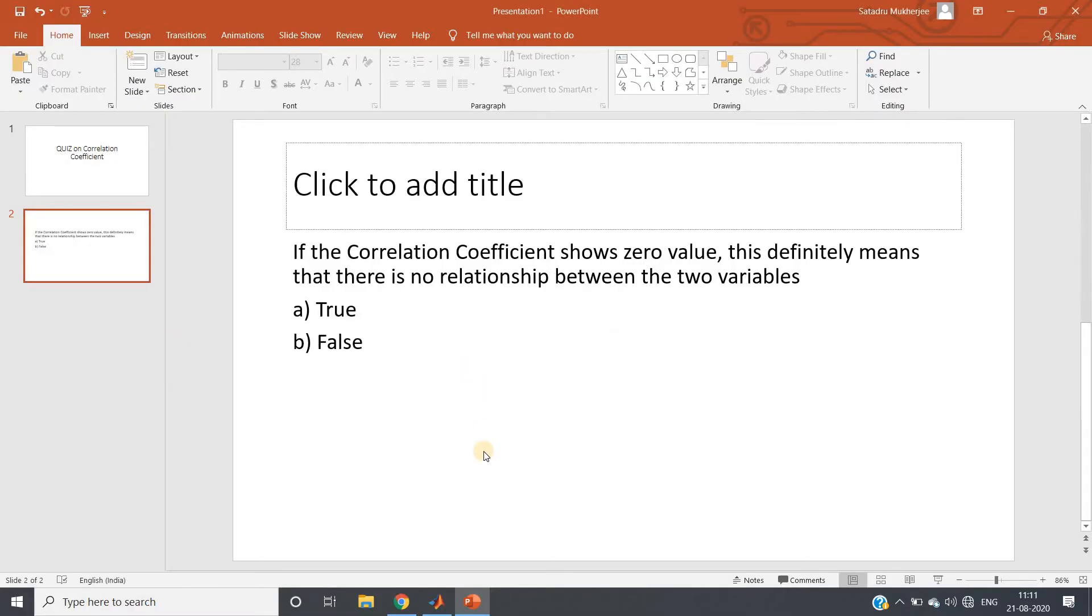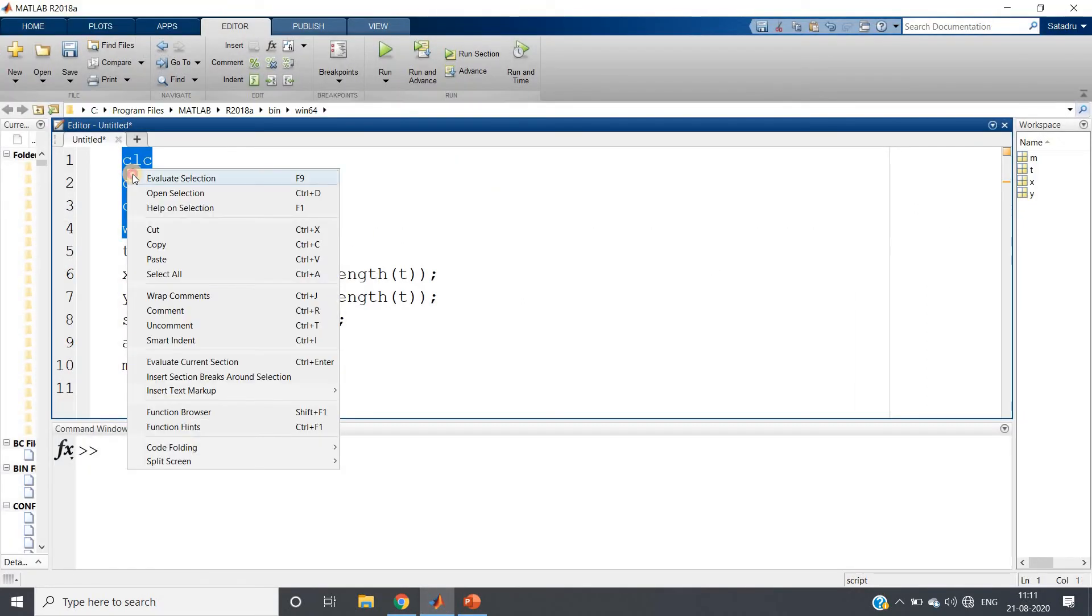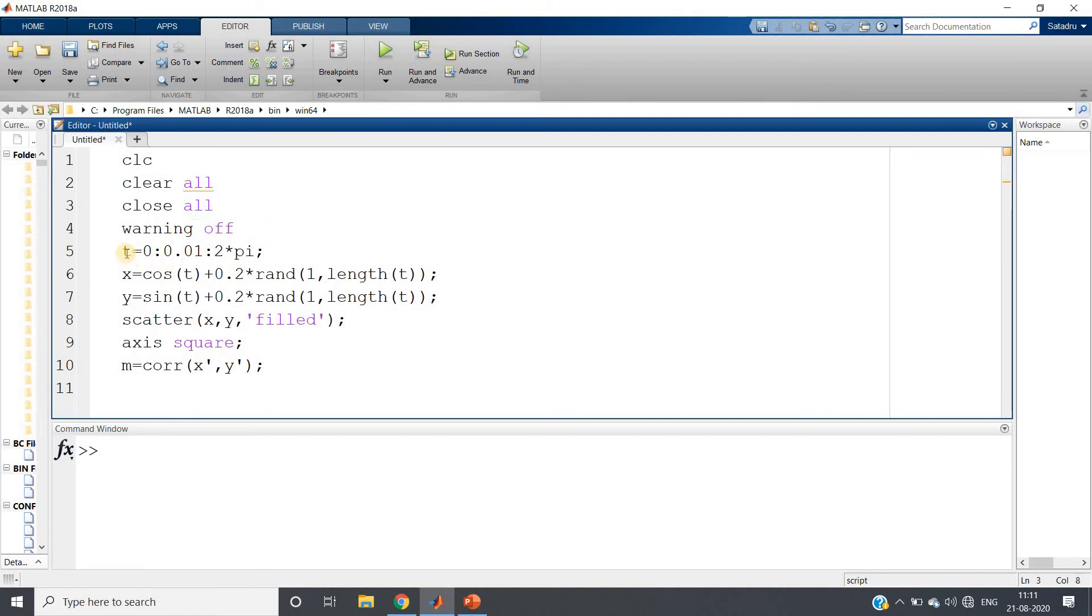Now let me go to MATLAB and show you one simple demonstration of that. So here I have written generally what we write: CLC, clear, close all, warning off. Then here T equals 0 colon 0.01 colon 2 pi. I am varying one angle from 0 to 2 pi, and I am plotting one circle which is a little bit noisy. As you know, the parametric equation of circle is x equals a cos theta, y equals a sin theta.